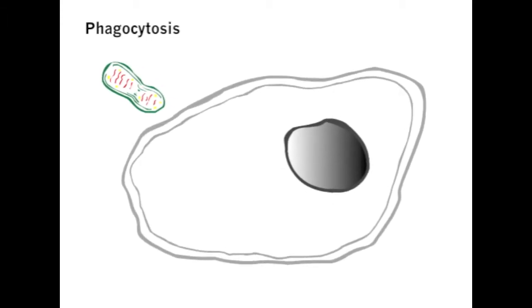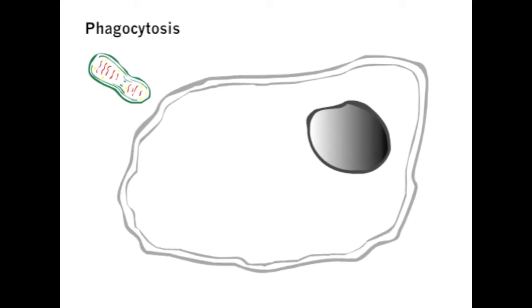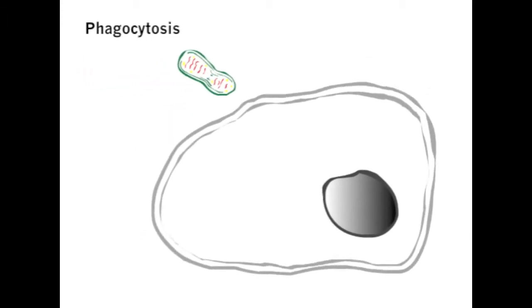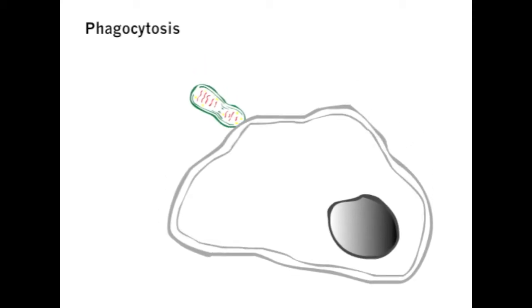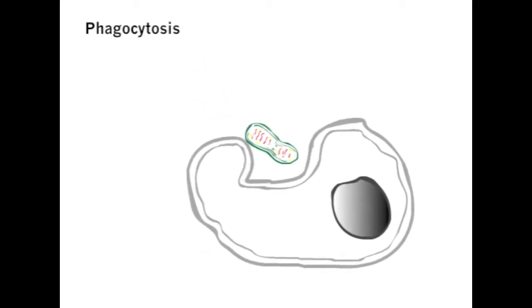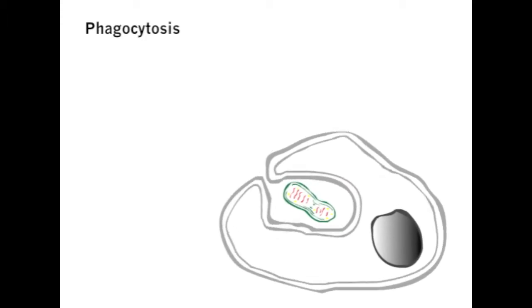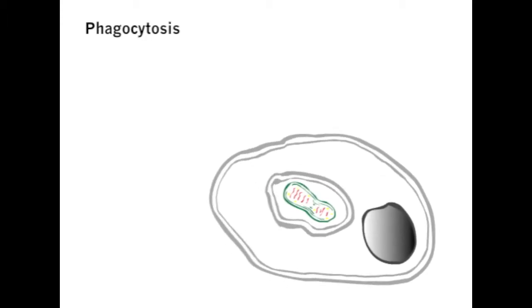Whenever there's an infection, harmful alien bacteria are eaten by white blood cells in order to remove bad cells from the body. The white blood cell envelops the bacteria in the depression of its cell membrane and pinches the depression off so it forms a bubble around the bacteria inside the cell. This bubble is the new vacuole.